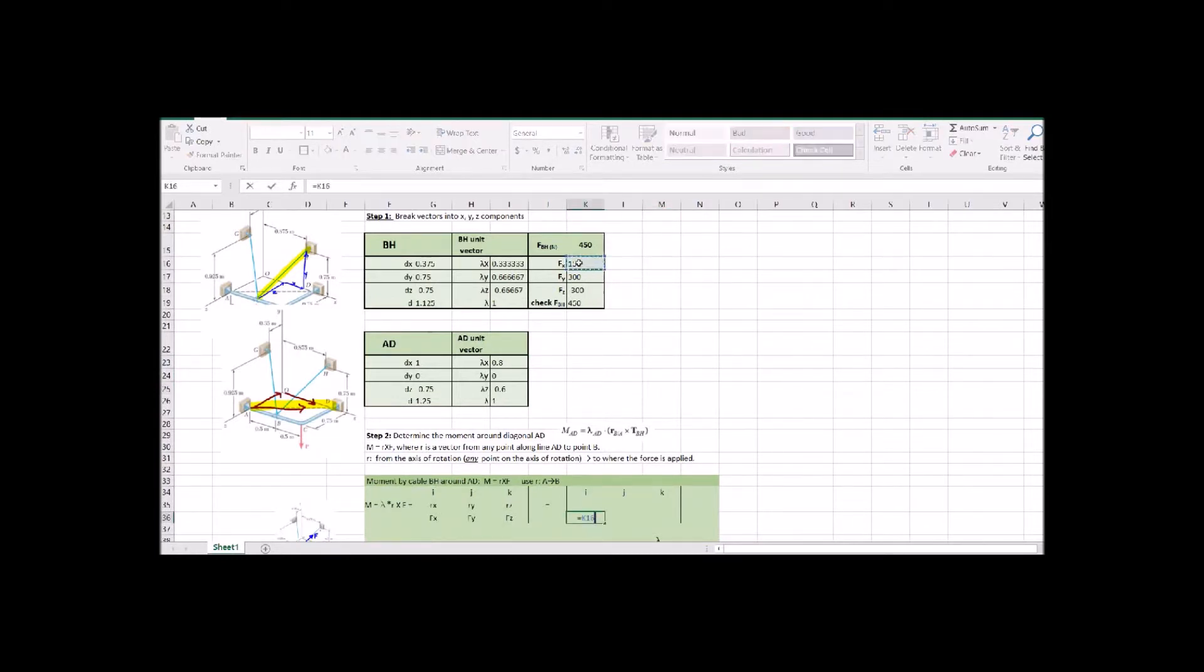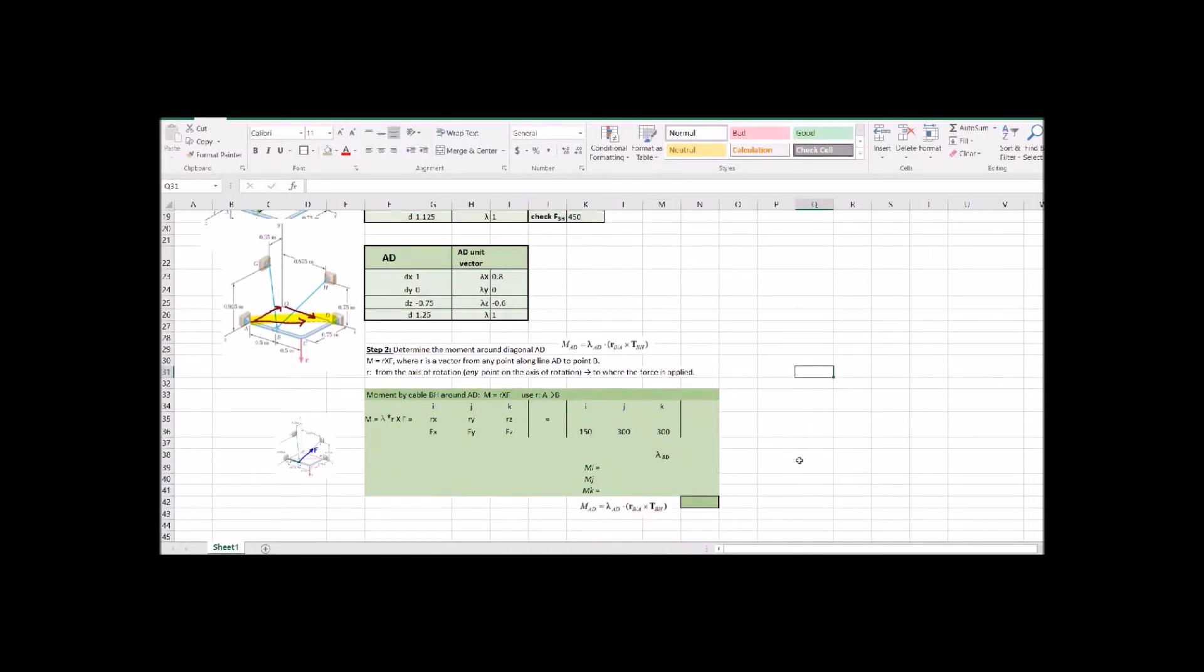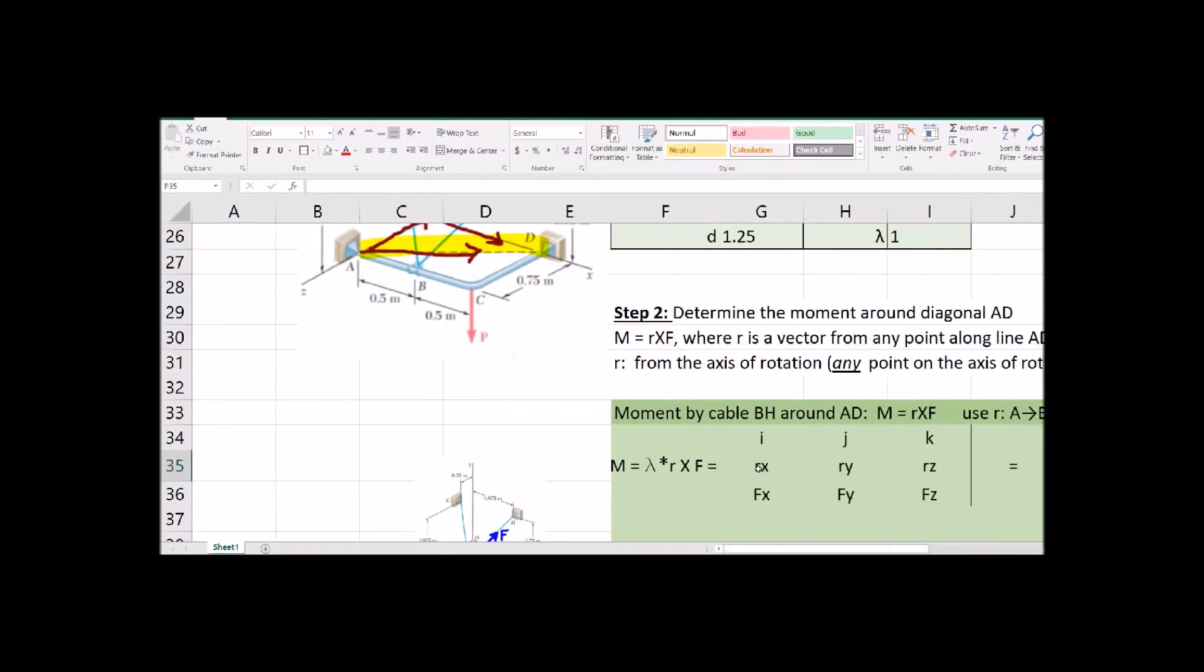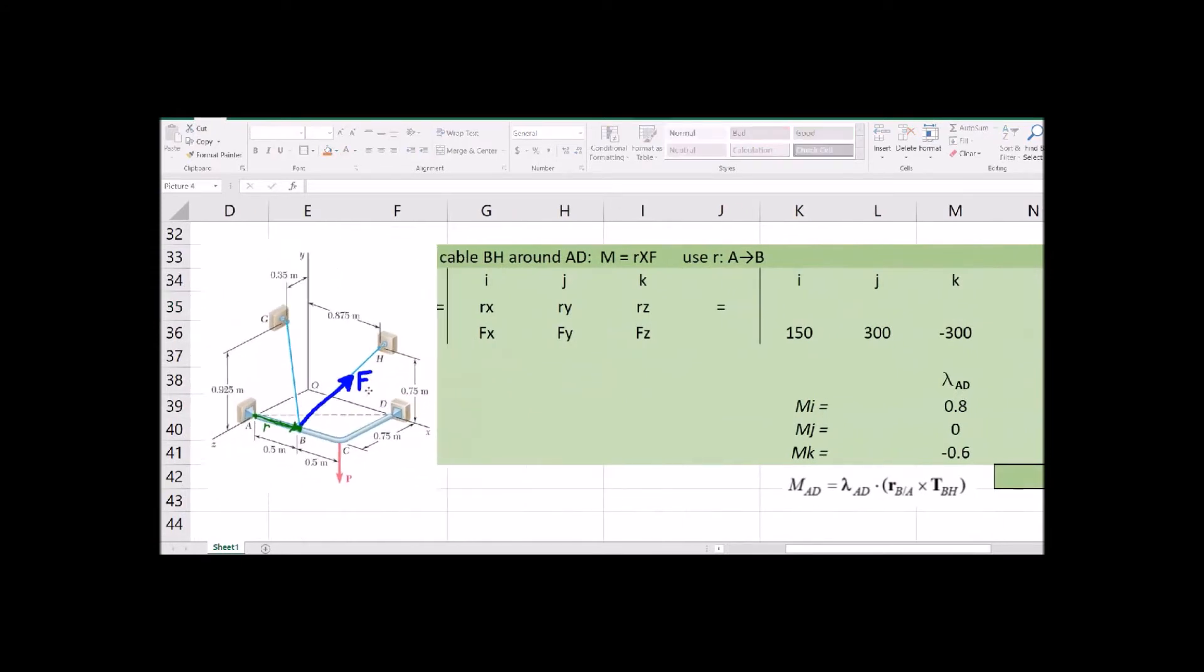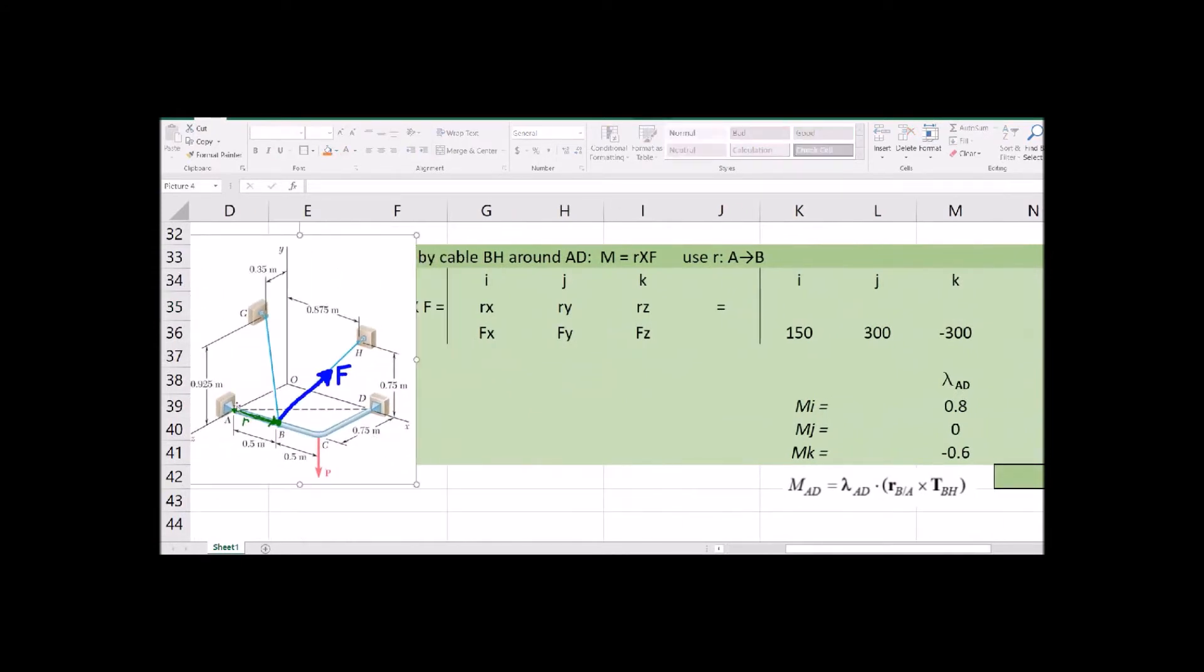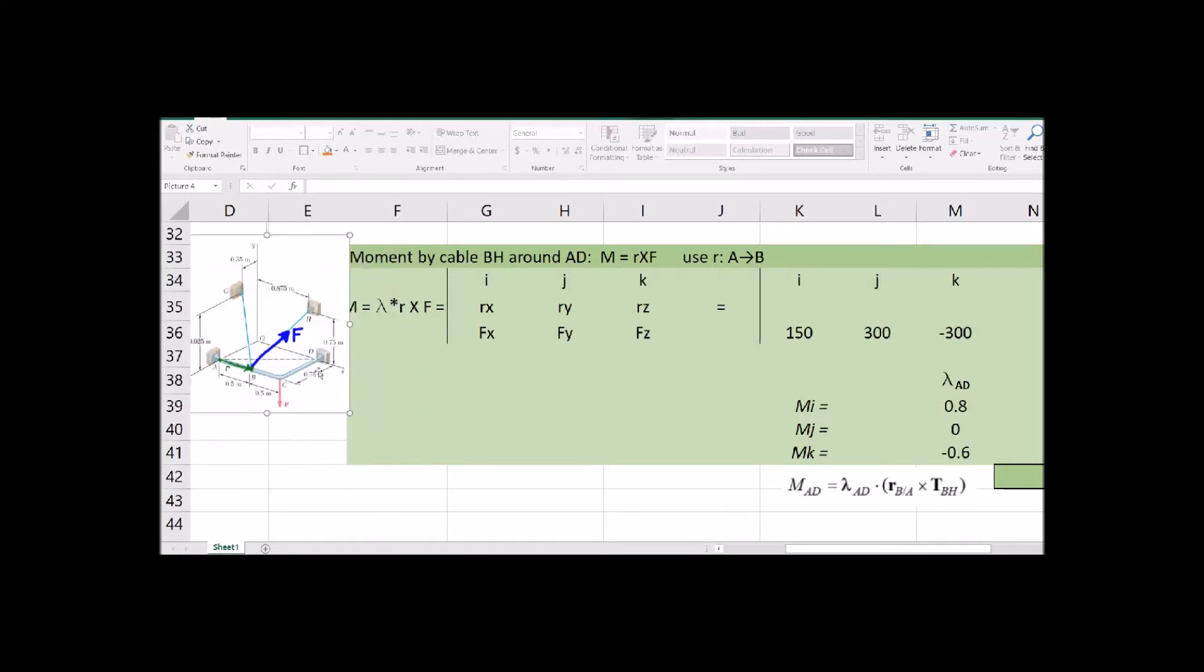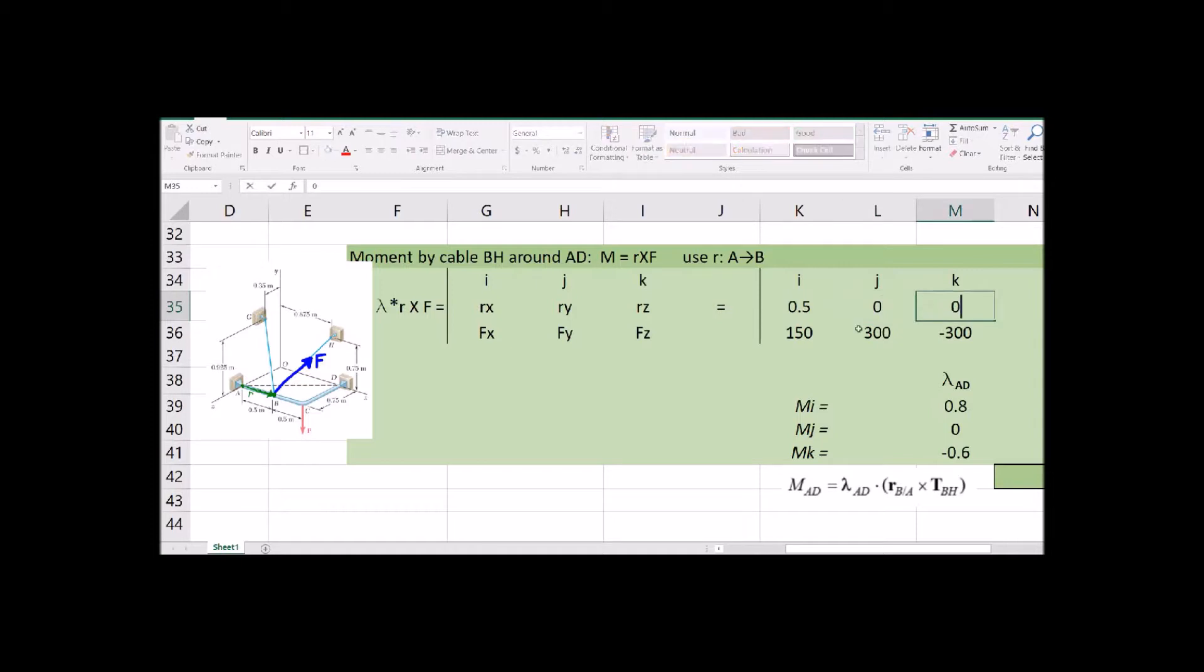Next part, we're just going to put these numbers into our cross product. So there's our forces and there is our unit vector that we're going to do the dot product. So I'm just copying those down in here into the cross product. Okay, so we can take a position vector from A to B. Really anywhere along that line would work, but let's try it from A to B. So that's just forward in the X direction. And we can do our cross products right here in Excel.